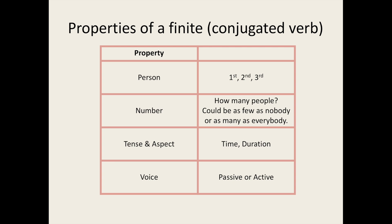We could say 'Bob told Sam about the party,' or 'Sam was told about the party by Bob.' The first sentence is active, the second is passive. And as we will learn later on, Latin has a more concise way of expressing passives than English.